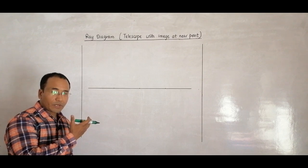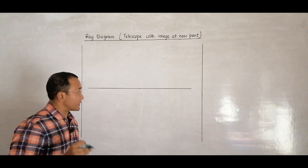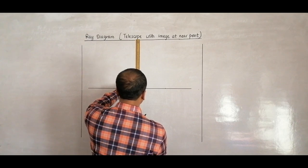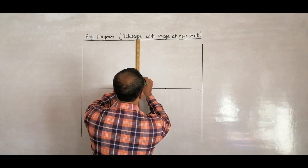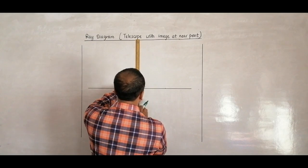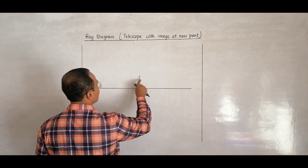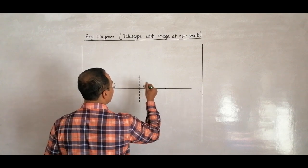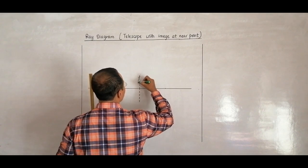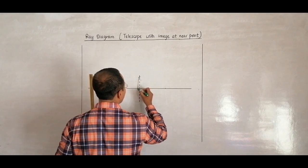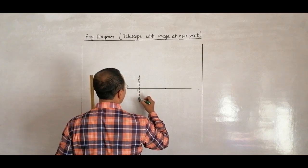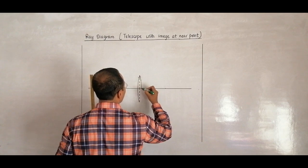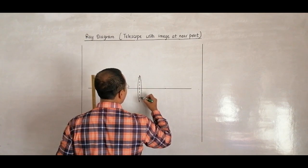It is because on the board and on your copies, the lengths will be different. Let me first draw the objective lens here — the objective lens. Let me make it dotted. These are dotted lines. The curve here should be a thin lens.